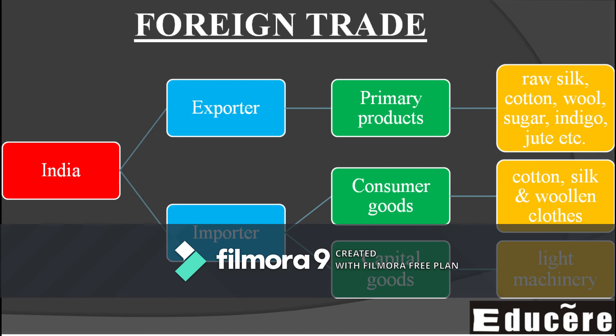Let us see what India was exporting and importing. India exported primarily primary products: raw silk, cotton, wool, sugar, indigo, jute, and so on. These primary products — from agriculture, animals, and plants — were exported out of India.